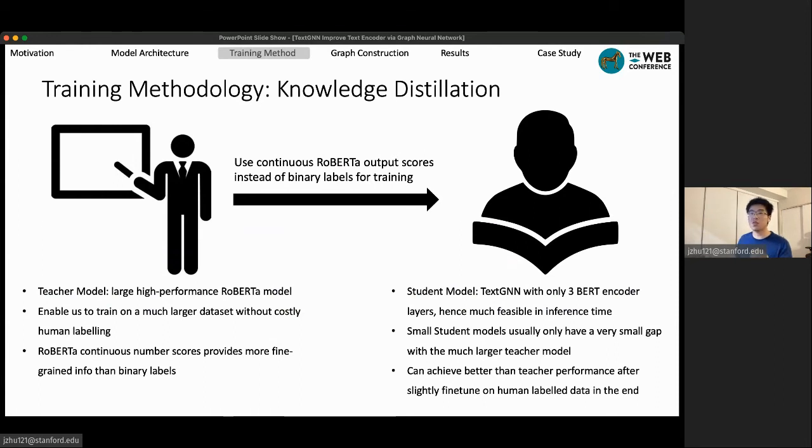And this, in general, will perform better than having a small sample with binary score. So this training framework gives us a huge training sample without costly human labeling and ends up with a small, efficient model that performs very similar to, or sometimes even better than the large strong model, which is fantastic.